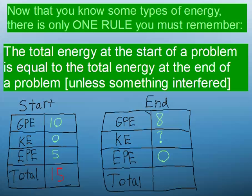Well, we can figure out that the total energy has to be the same at the beginning and end, it's 15 joules, which means the kinetic energy here simply has to be 7.